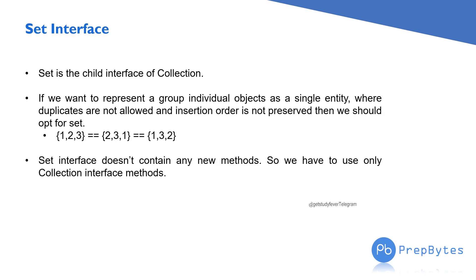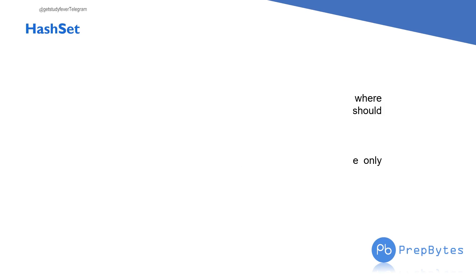The Set interface does not contain any new methods. Unlike the List interface which contains some different methods from the Collection interface, the Set interface does not contain any new methods. We have to only use Collection interface methods. Next we will see the implementation class of the Set interface, that is HashSet.